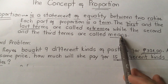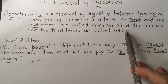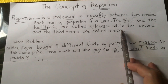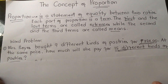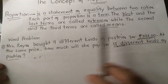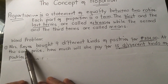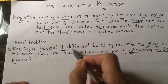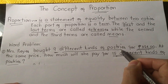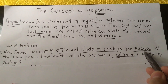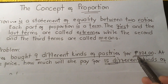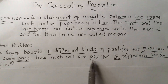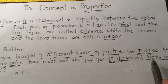We need to understand the definitions of proportions so that we can solve problems about this concept of proportion. I have a problem: Mrs. Reyes bought 9 different kinds of pastries for 324 pesos at the same price. How much will she pay for 15 different kinds of pastries?